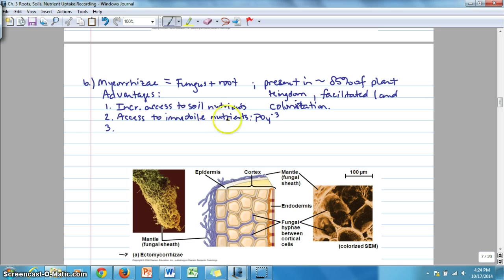As well as increasing access to immobile nutrients such as phosphate. Another advantage would be that mycorrhizae can basically decompose organic matter themselves. They are fungi that have the ability to secrete hydrolytic enzymes extracellularly to decompose organic matter, which makes more nutrients available to the plant than they would otherwise have had access to.